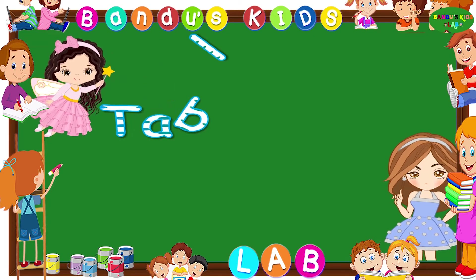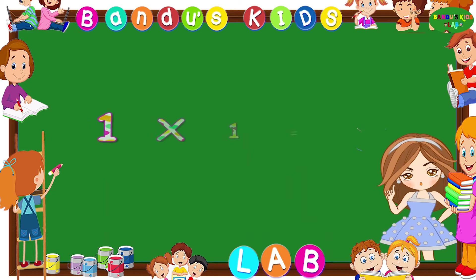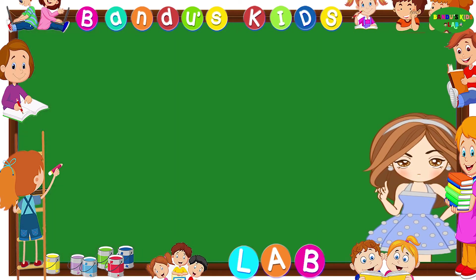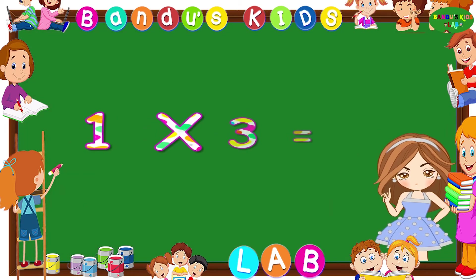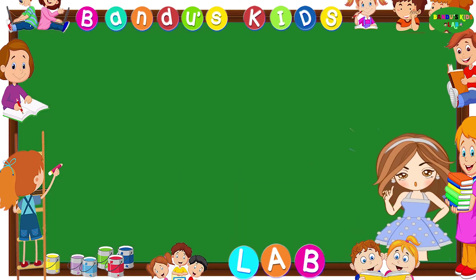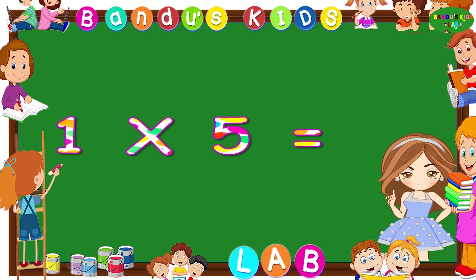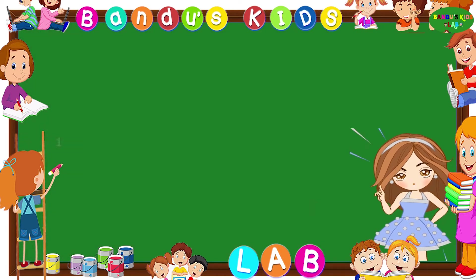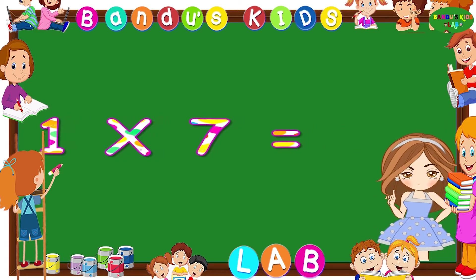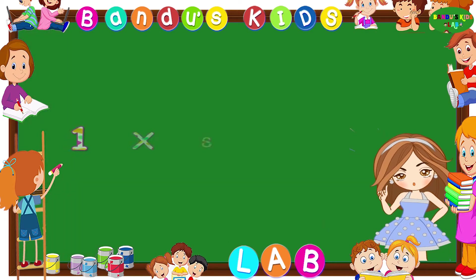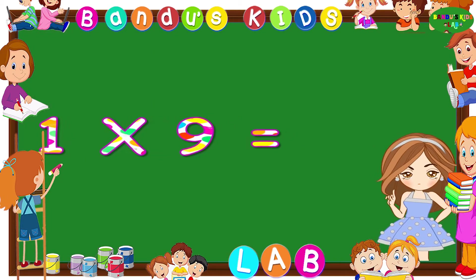Hello kids, let's learn with fun! The table of one. Are you ready? Let's start. One ones are one. One twos are two. One threes are three. One fours are four. One fives are five. One sixes are six. One sevens are seven. One eights are eight. One nines are nine.